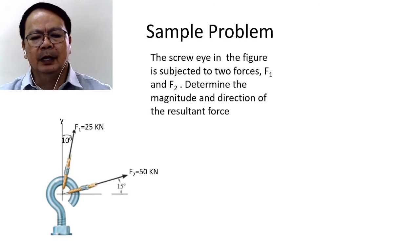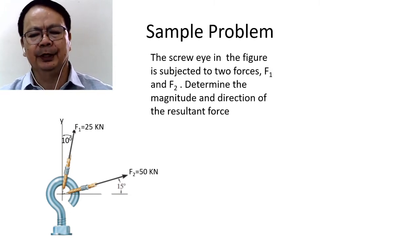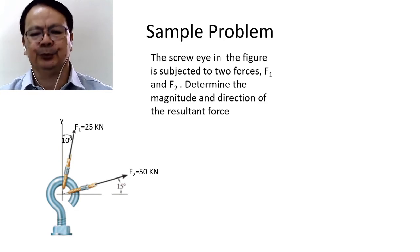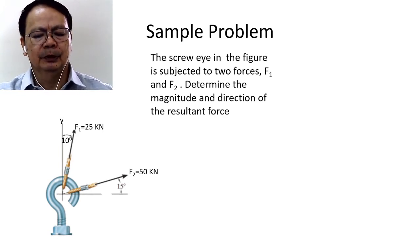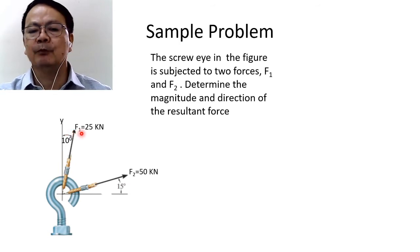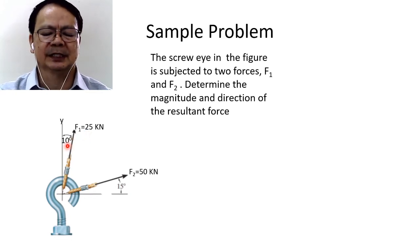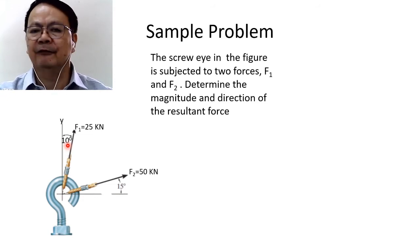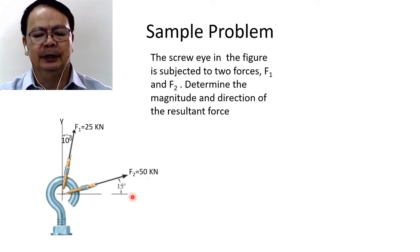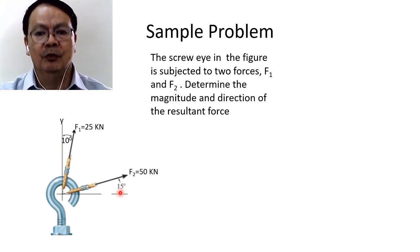The problem is about a concurrent force system. The screw in the figure is subjected to two forces F1 and F2 — determine the magnitude and direction of the resultant force. In the figure, F1 has a magnitude of 25 kilonewtons directed 10 degrees from the vertical y-axis, and F2 has a magnitude of 50 kilonewtons directed 15 degrees from the positive y-axis.